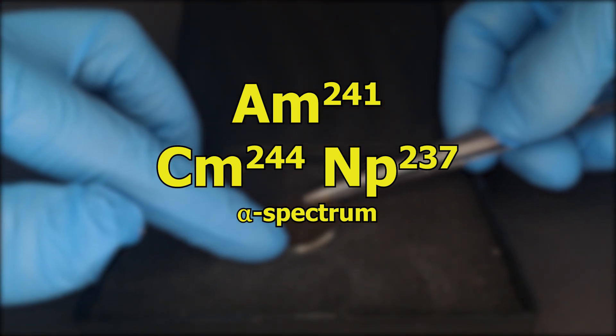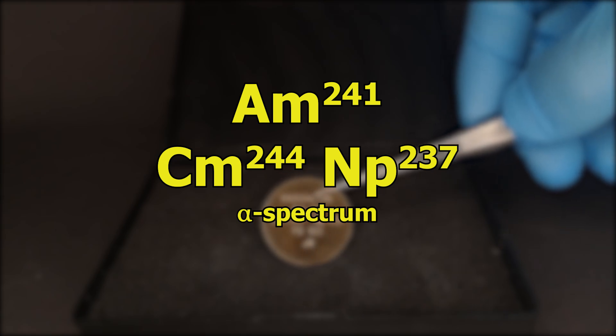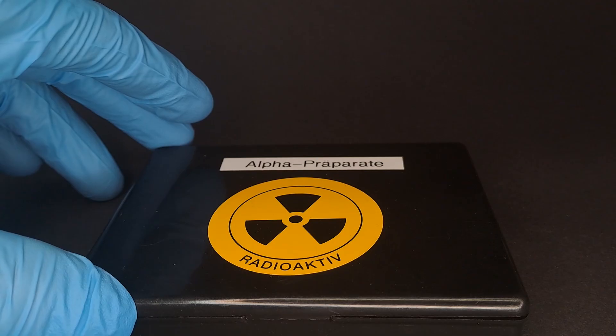Today, the alpha spectrometer is being calibrated. Especially the energy calibration needs to be done before each measurement, otherwise you won't be able to draw useful results from your spectrum.